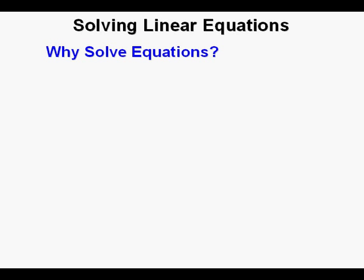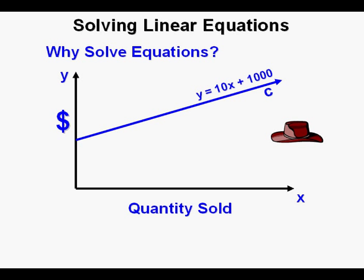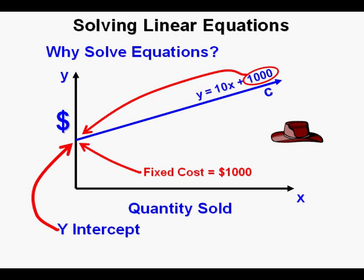We'll take a look at our first graphic in this lesson, the graph of a business situation. This business makes hats. The business cost is given by the equation y equals 10x plus 1,000. This number 1,000 represents $1,000 — the fixed cost or beginning cost the business must pay before manufacturing any hats. A fixed cost will be a one-time cost before manufacture.